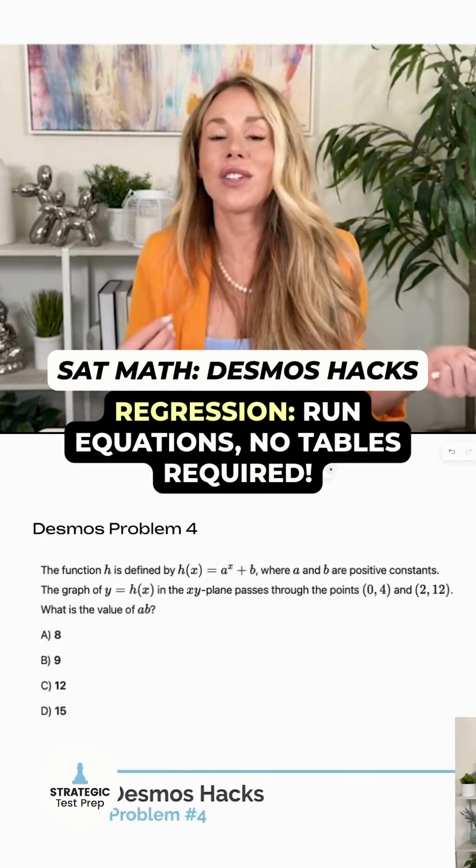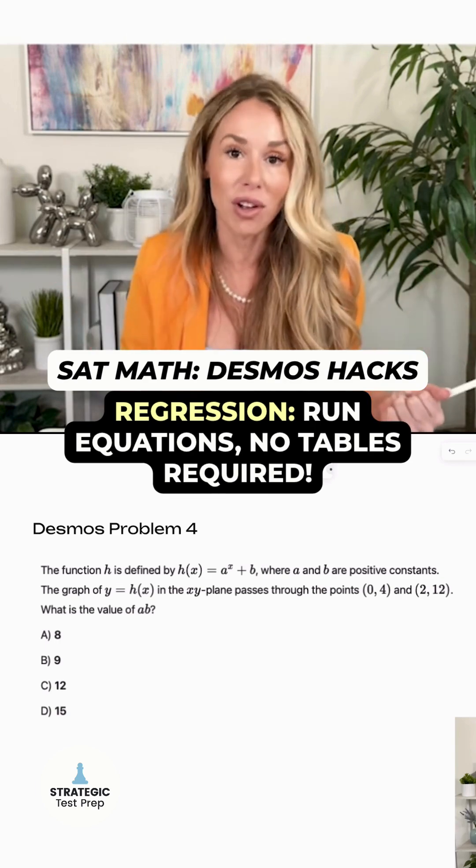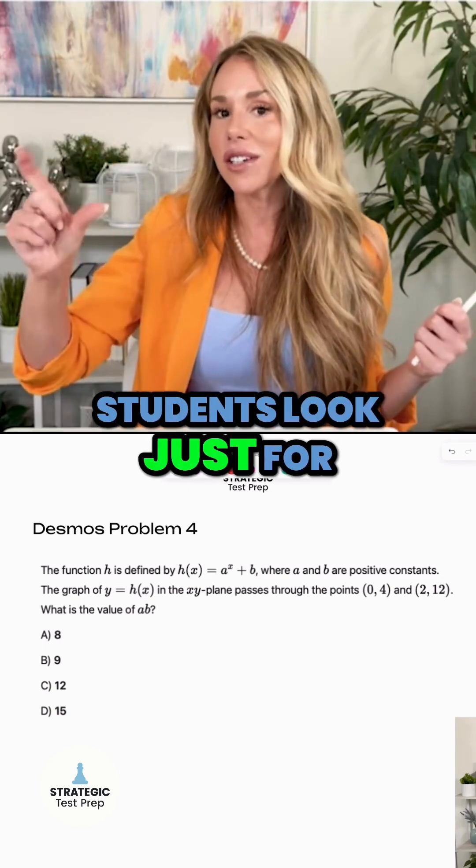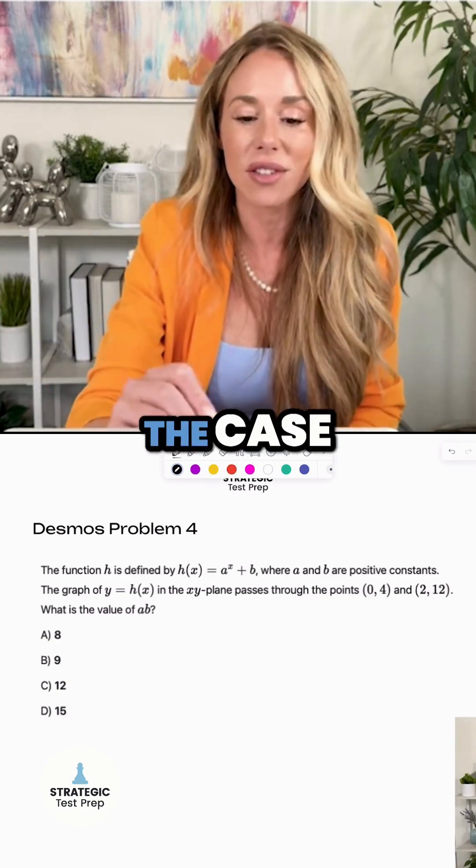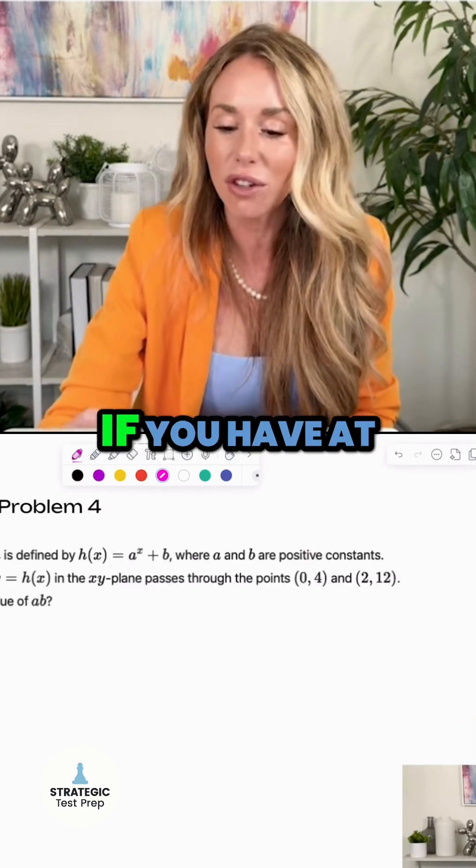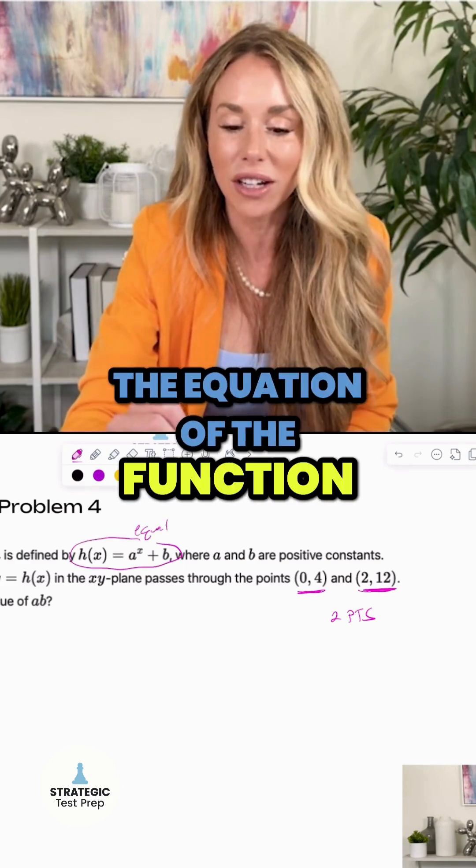All right, my next problem - I wanted you to see this because I want you to understand that you can run a regression even if they don't give you a table. I think lots of students look just for them to give you a table to run the regression, and that is not the case. So what I want you guys to understand is if you have at least two points and they give you the equation of the function, you can run a regression.